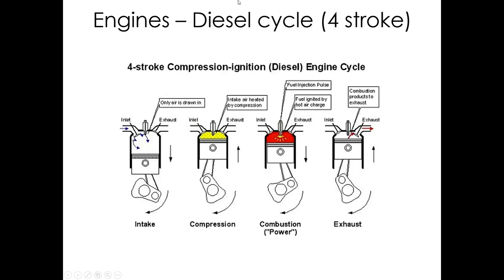The diesel cycle is similar to the Otto cycle, but you only pump air into the cylinder and compress it so much that the air becomes hot enough to auto-ignite fuel. You squirt in an easily auto-igniting fuel, and it starts burning immediately upon contact with the hot air. Unlike a gas engine where a flame kernel grows to fill the chamber, diesel combustion occurs at the frontier between fuel droplets and air, making complete combustion harder and limiting maximum RPM.